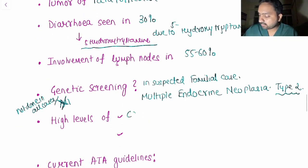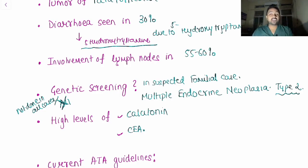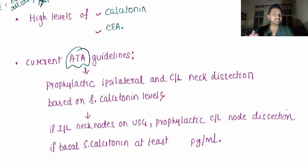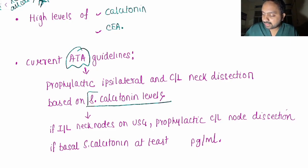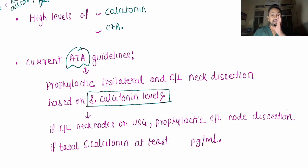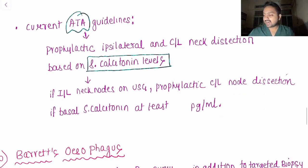Medullary thyroid carcinoma has high levels of calcitonin and carcinoembryonic antigen. Per current American Thyroid Association guidelines (from Sabiston), prophylactic ipsilateral and contralateral neck dissection is based on serum calcitonin levels. This is a true statement: if there are ipsilateral neck nodes on ultrasound, prophylactic contralateral node dissection can be done if basal serum calcitonin is at least 200 picograms per millilitre.